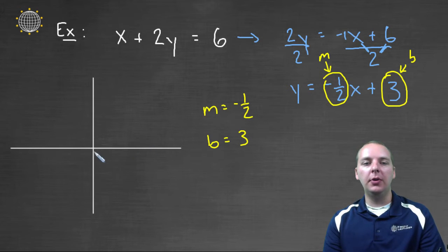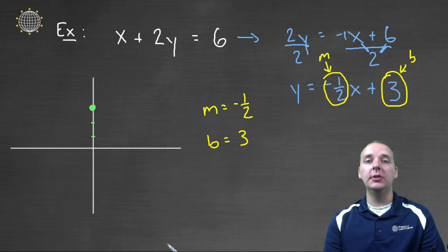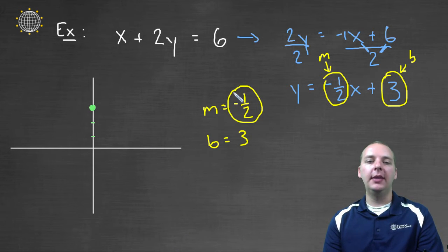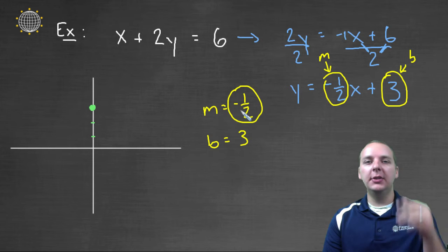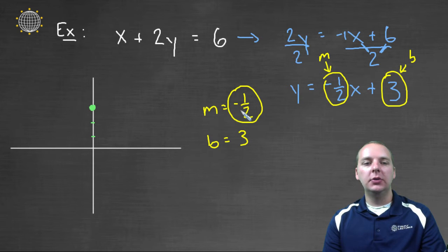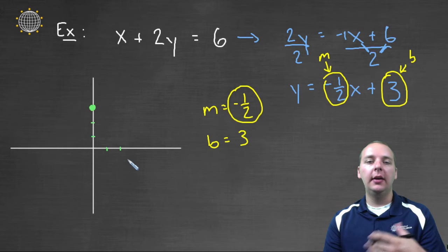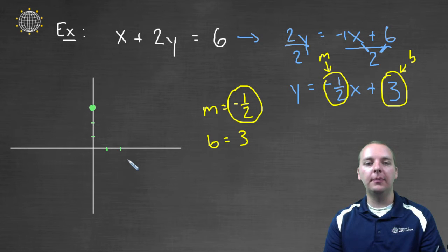First thing you'll recall that we do is we'll start by plotting the y intercept. So we'll go up one, two, three. This is where this graph crosses the y-axis. And then from there, let's get some additional points using the slope. So rise over run, negative one over two. Now if your rise is negative, that actually means go down. So we'll go down one, and to the right two. If your run is positive, you always go to the right. If your run is negative, you go to the left.